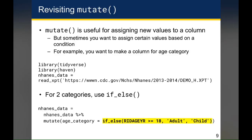When we talked about mutate in the last class, we talked about how mutate is useful for assigning new values to a column or creating new columns. But sometimes you want to create or assign a specific value to a column based on a condition. For example, let's say you want to make a column that contains the age category.